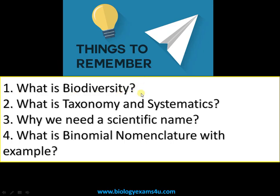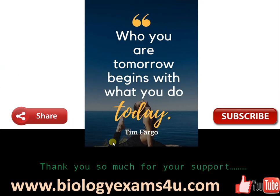So to summarize: biodiversity refers to the variety of life on Earth. Taxonomy is the science of identification, naming, and classification of organisms based on characteristics. Systematics is taxonomy plus the evolutionary history of the organism. We need scientific names because local names vary globally — a universal name is needed. Binomial nomenclature is a two-term system using a generic name and a specific epithet to name a species. I will be back with another topic. Till then, take care. Thanks for watching — you're with Biology Exams for You. Thank you for your support.